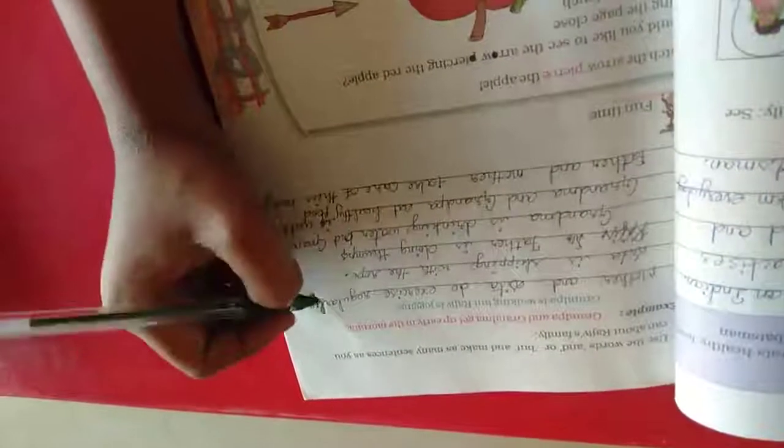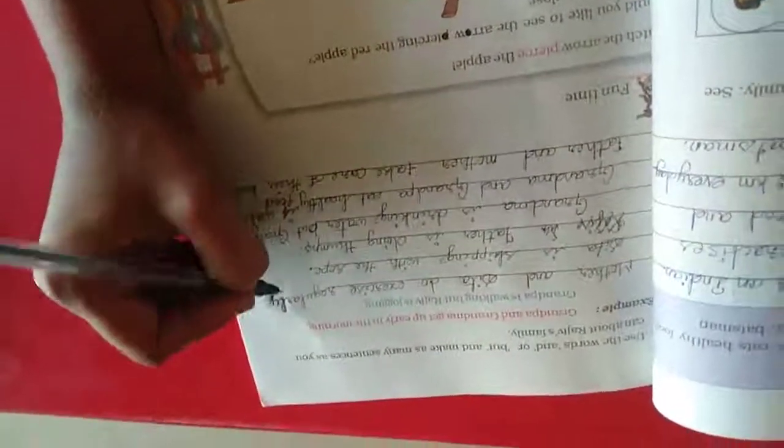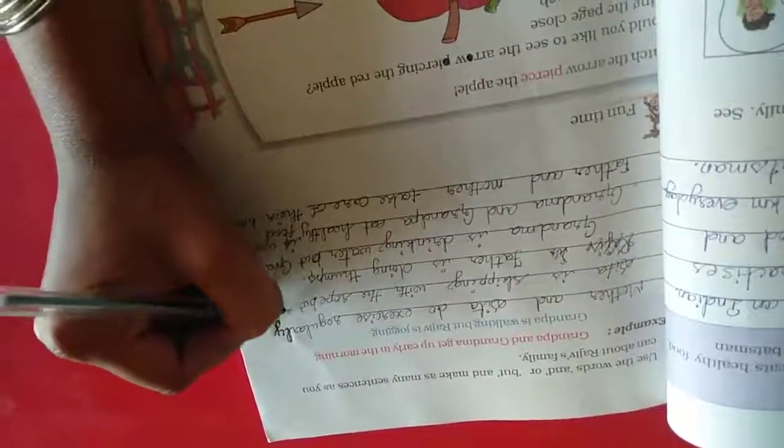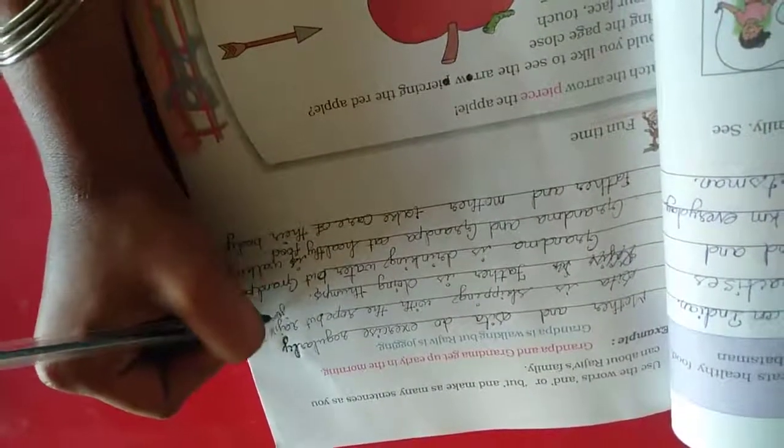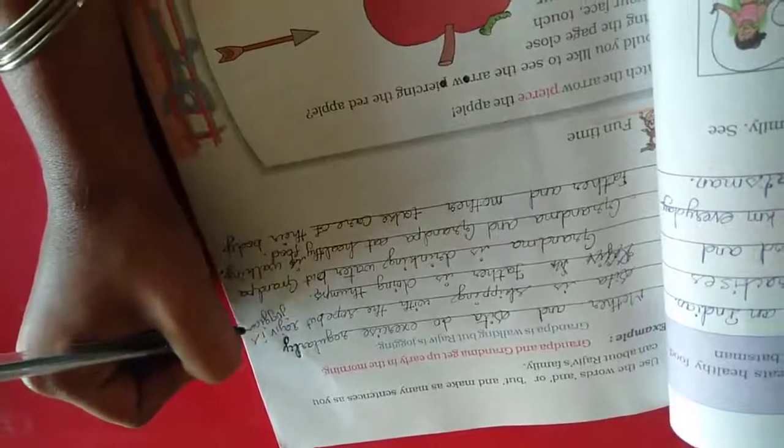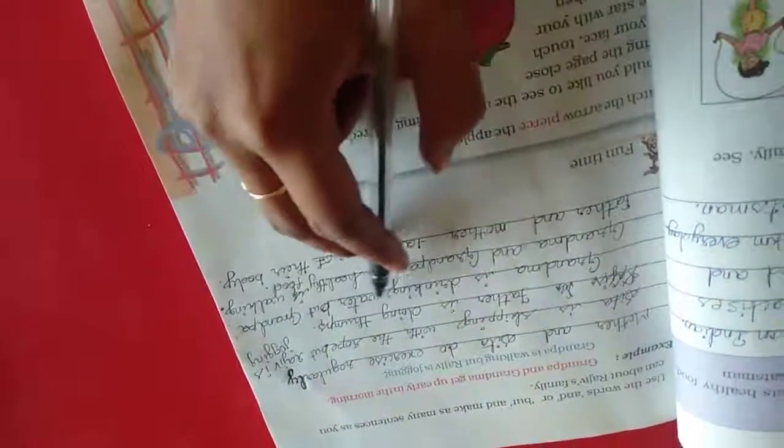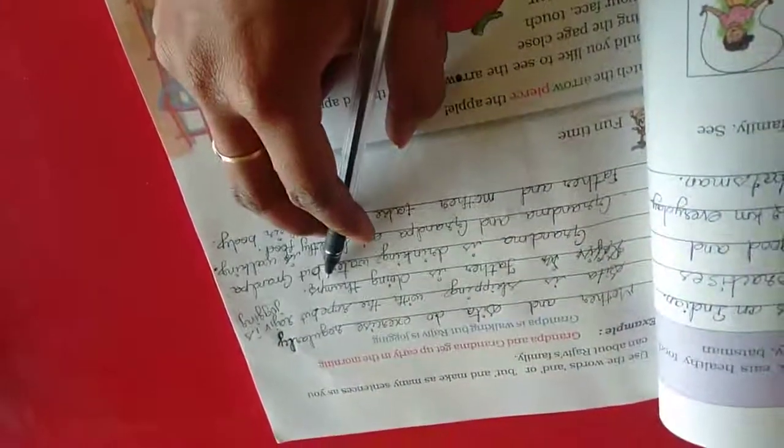Sita is skipping with a rope, but Rajiv is jogging. Father is doing thumbs. Grandma is drinking water, but grandpa is walking.